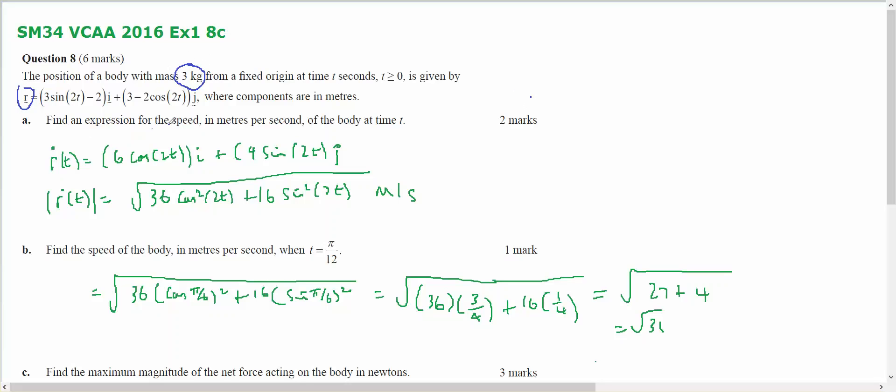Find the expression for the speed. Well, I've taken the derivative. The speed is the magnitude of the velocity, so it's going to equal this and it's a general rule because it's at any time t.